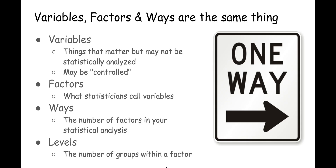You may see an ANOVA described as being a one-way, two-way, or repeated measures ANOVA. First, we need to distinguish between variables, factors, ways, and levels.